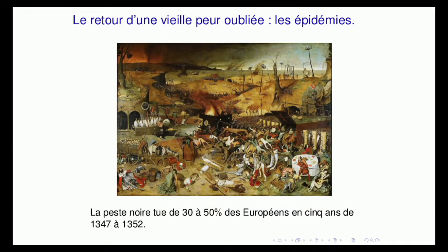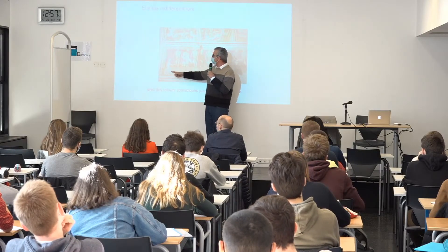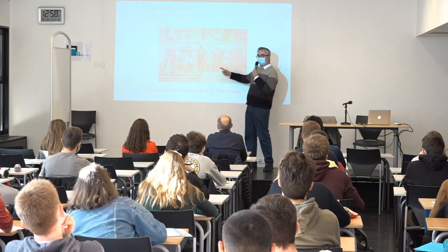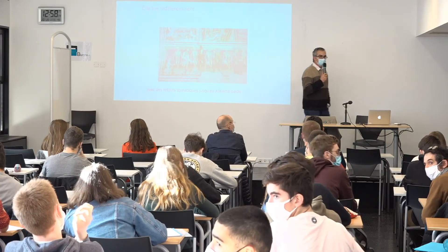Vous avez ici un tableau de Bruegel au musée du Prado qui décrit la peste noire, une épidémie légendaire. En Europe, elle a tué entre 30 et 50% des gens en 5 ans. Quand on nous parle des chiffres de mortalité du Covid, on n'en est pas du tout à cette échelle-là. La conséquence de la peste a été un impact psychologique énorme sur toute la société occidentale. Ce qui a choqué les gens, c'est qu'elle tuait indifféremment : la mort emmenait un enfant, un noble, un paysan, un mendiant. Que vous soyez riche, puissant ou pauvre, vous êtes une victime de la même façon.